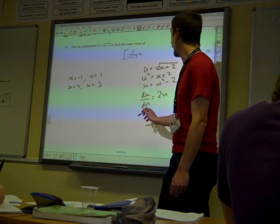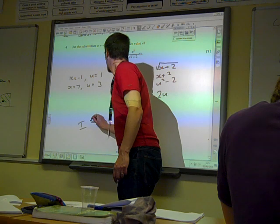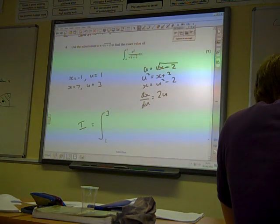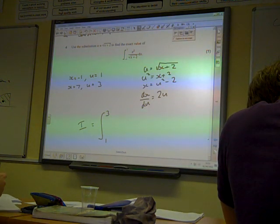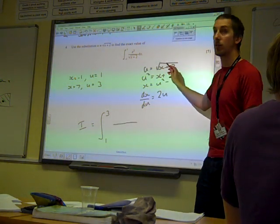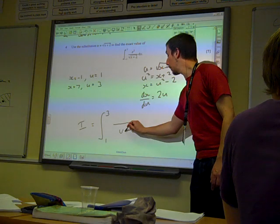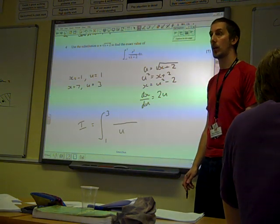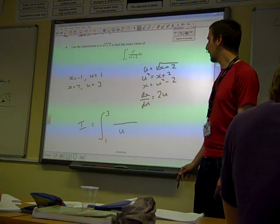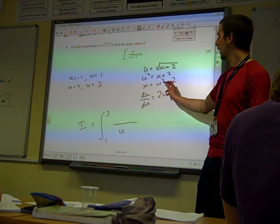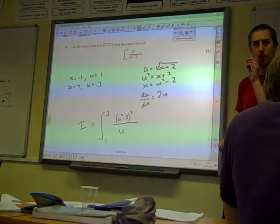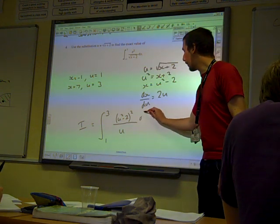So our original integral is the integral now from 1 to 3. And we're going to do some replacements of some things in there. We've got the square root of X plus 2 on the bottom, so that is U, down there. We've got X squared on the top. And X squared is U squared minus 2 squared. We've got DX here, so we've got DX.